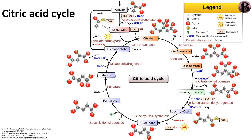Acetyl-coenzyme A is responsible for kick-starting the citric acid cycle, also known as the Krebs cycle. I won't go into details right now — I'll leave it for another video. But the citric acid cycle has eight important steps, during which two carbons that were originally the acetyl group of acetyl-coenzyme A are released as carbon dioxide, one of the major products of cellular respiration. This cycle provides the electrons that fuel the process of oxidative phosphorylation, the major source of ATP.